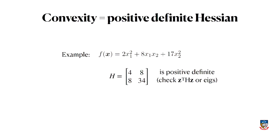You can look back at how we did this a bunch of videos ago. So you can either check that z transpose Hz is always positive, or you can just calculate the eigenvalues of that matrix and you get two positive numbers. So that means that f of x is convex. And that's a simple way, that's a tool that we can actually use now.